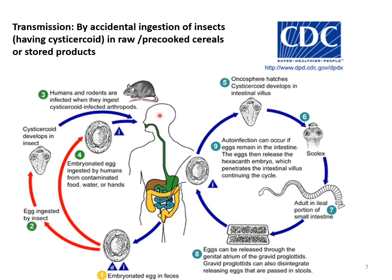In the direct life cycle, the final host ingests contaminated food or water with eggs. The eggs reach the small intestine, hatch to produce a hexacanth embryo, which penetrates the villi of the small intestine and develops into cysticercoid larvae. These cysticercoid larvae return to the lumen of the intestine through penetration and become mature parasites producing gravid proglottids or eggs. In the indirect life cycle, eggs are ingested by intermediate hosts and cysticercoids develop in their body.